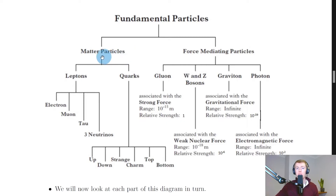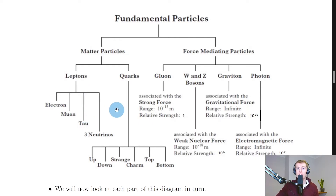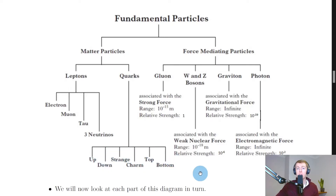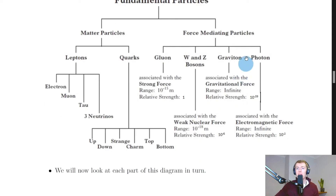The matter particles, or fermions, are split into two groups: leptons and quarks. We have six different types of leptons — the electron, muon, and tau particles — and each of these has their own neutrino: the electron neutrino, muon neutrino, and tau neutrino. We also have six types of quarks: the up, down, strange, charm, top, and bottom. We'll explore both leptons and quarks in more detail in separate videos.